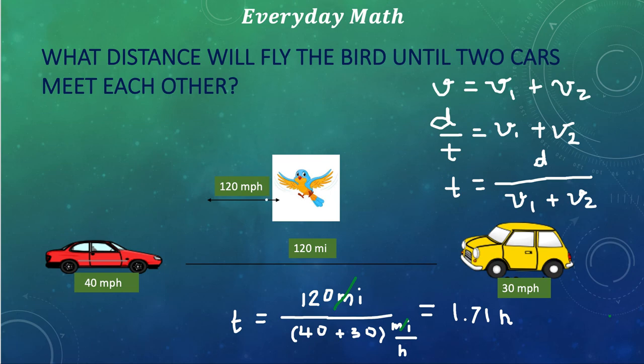But now, what we want to find here is the velocity of the bird as it is flying. We can write V is equal to D over T. The distance we already know is 120 miles. We don't know the distance, in fact. We know the distance between two cars, but we don't know what distance is going to fly the bird.